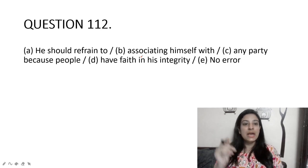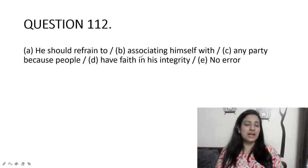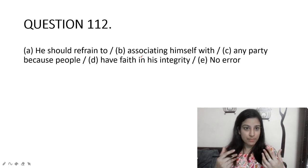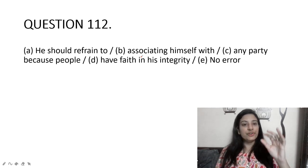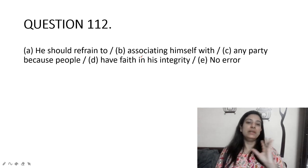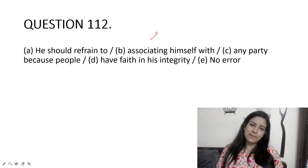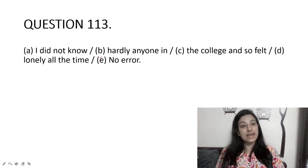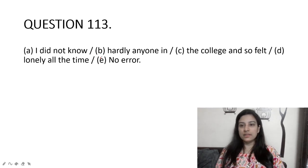He should refrain to associating himself with any party because people have faith in his integrity. The error is a preposition error: you do not 'refrain to' — you 'refrain from.' Remember: 'refrain from' is the correct collocation, and the '-ing' form after it is correct. So it should be 'refrain from associating.'